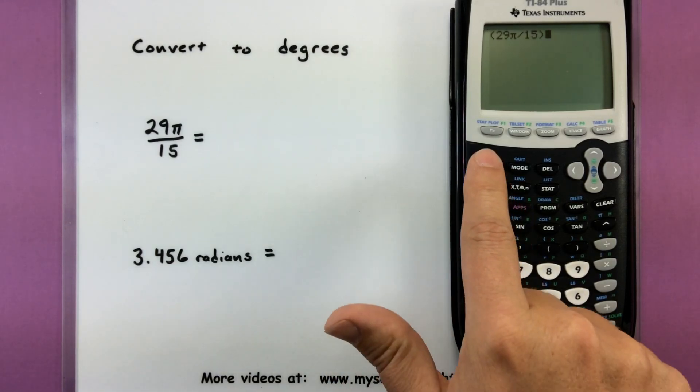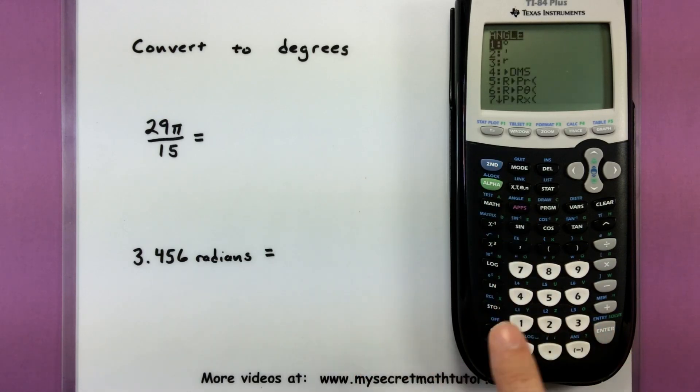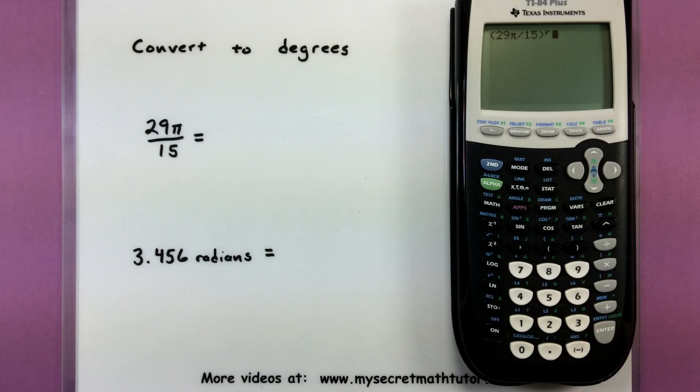Now I'm going to tell the calculator that this is a radian measure. So I'm going to go to second angle. I'm going to go down a little bit and give it that little r. That's how the calculator knows that this is really in radians. Since the mode of the calculator is in degrees though, as soon as I press enter, it's going to convert this value and now it's in degrees.